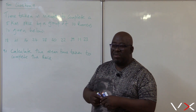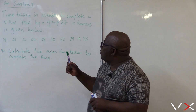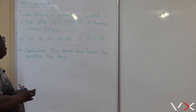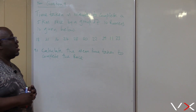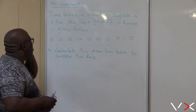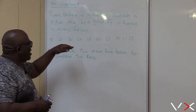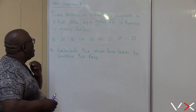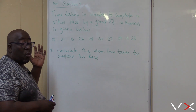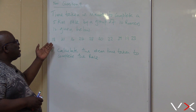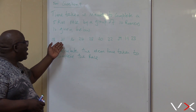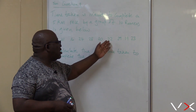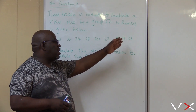This was question 9 in November 2008. It says: a time taken in minutes to complete a 5km race by a group of 10 runners is given below. One runner took 18 minutes, another 21, another 16, 24, 28, 20, 22, 29, 19, and 23.